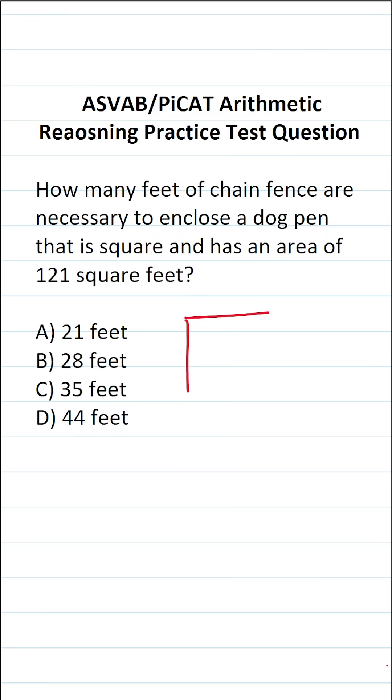On the actual ASVAB and PiCAT, you're not given a reference sheet or a calculator. For that reason, you have to be able to perform these calculations by hand, as well as commit some of these basic formulas to memory.